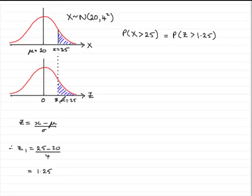The tables you have are cumulative tables. They work out probability up to a z value from the left. Knowing that the whole area is 1, we can say this equals 1 minus the probability that z is less than 1.25.